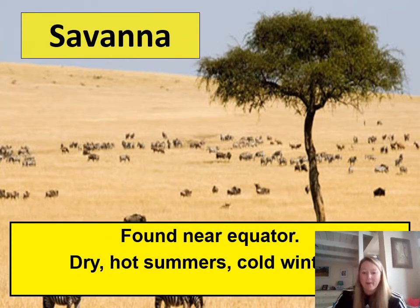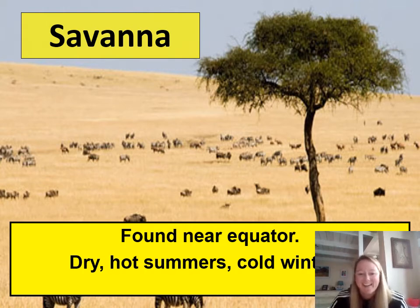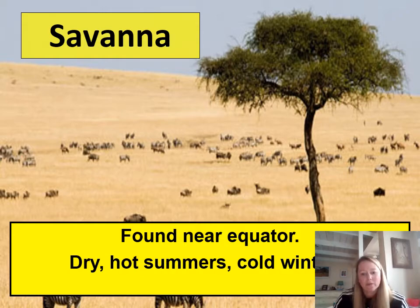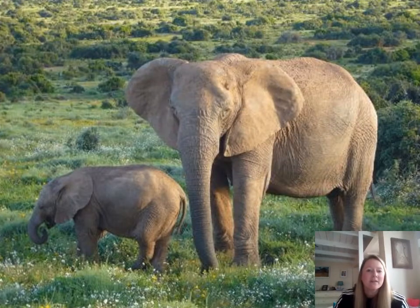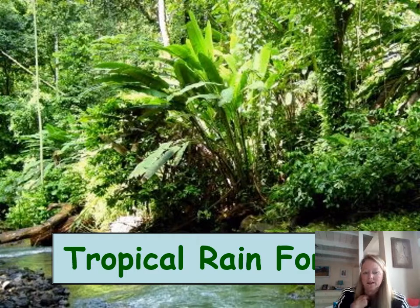The savannah is another biome made famous by the Lion King. It's found near the equator and has very dry, hot summers and cold winters. It's known for animals like elephants and other large organisms.